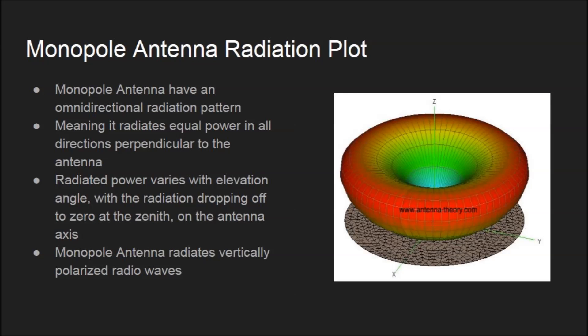Monopole antennas have an omnidirectional radiation pattern, meaning they radiate equal power in all directions perpendicular to the antenna plane. This can be seen in our 3D model to the right. Radiated power varies with elevation angle, with the radiation dropping off to zero at the zenith on the antenna axis. Monopole antennas radiate vertically polarized radio waves.